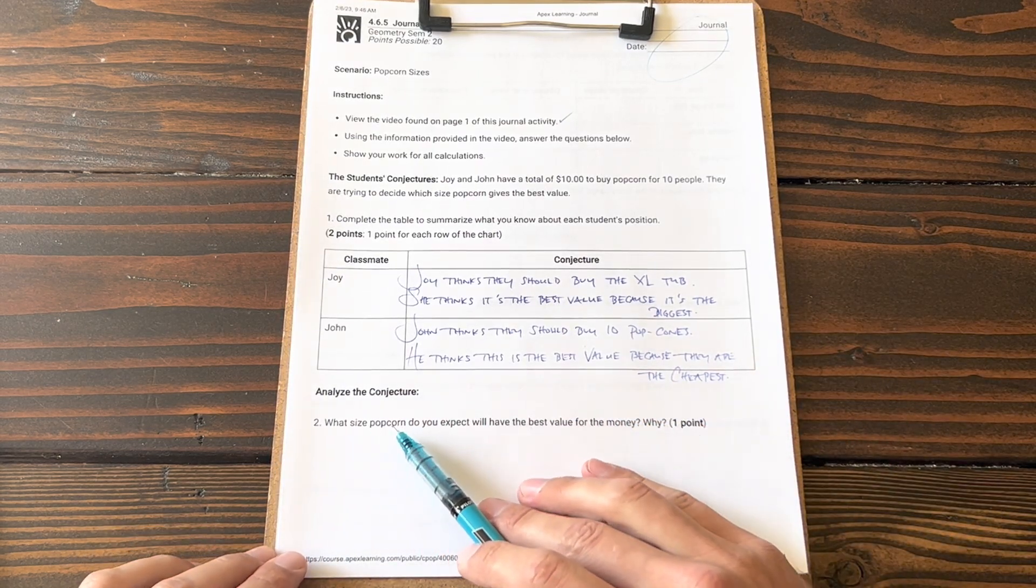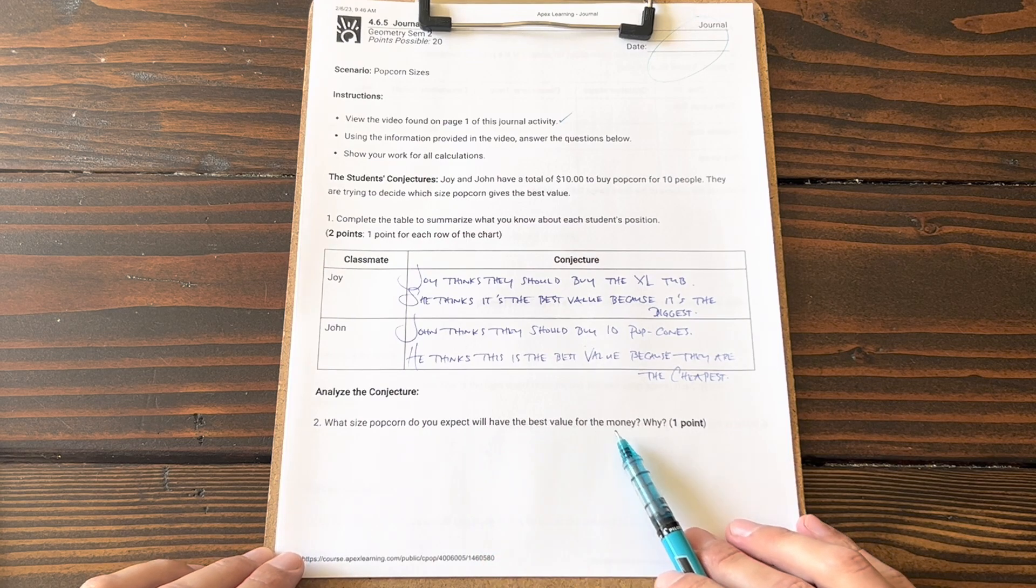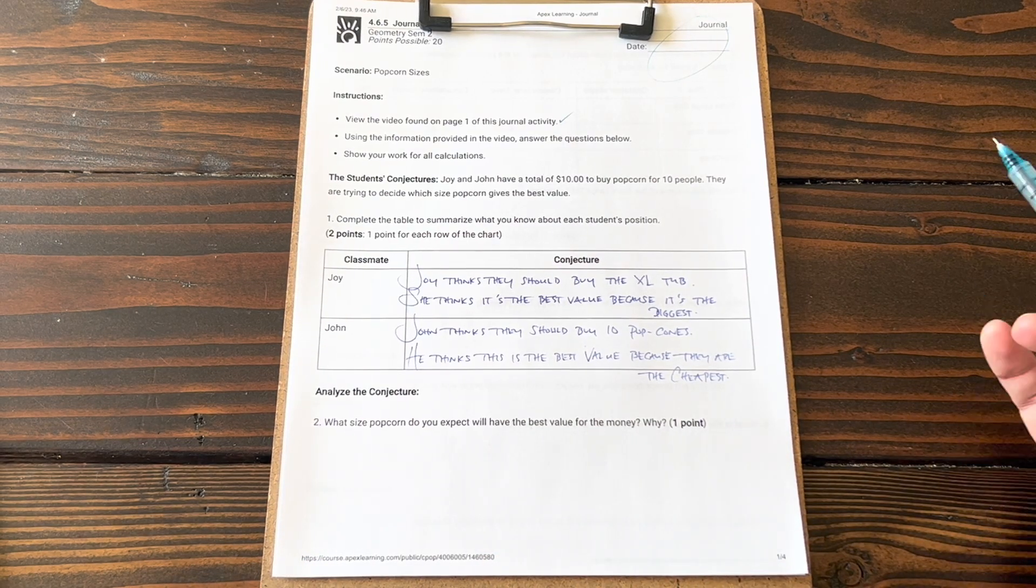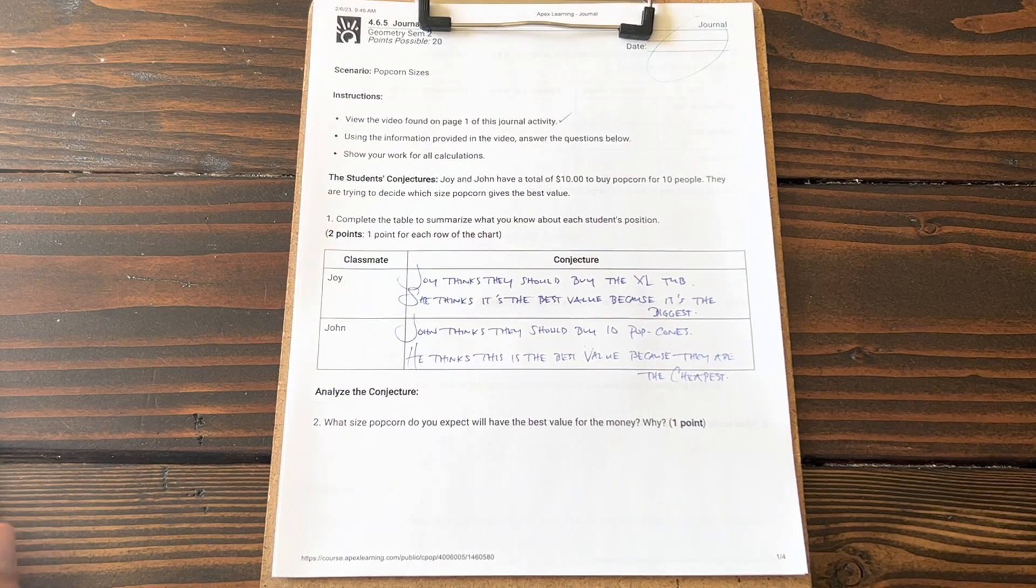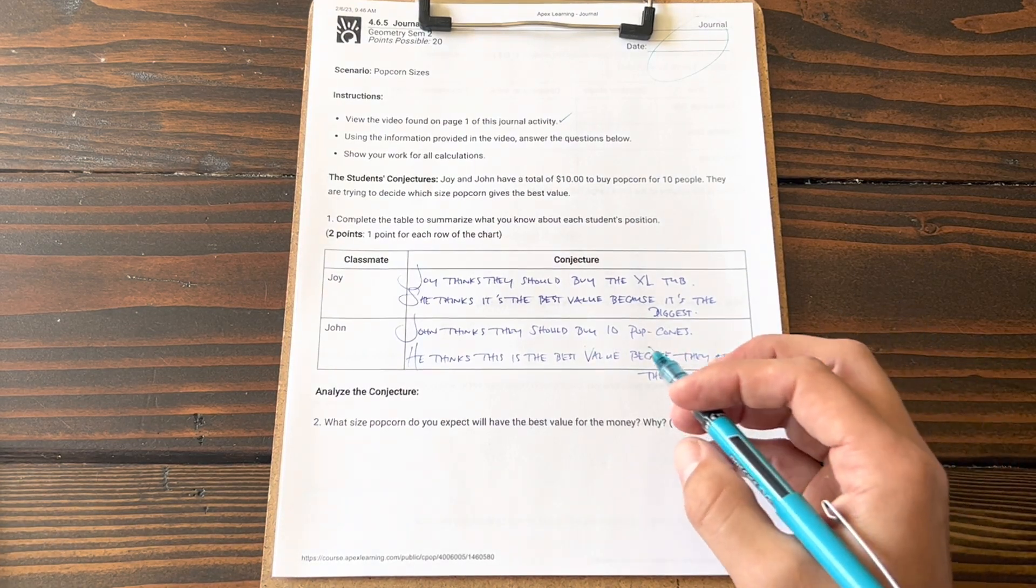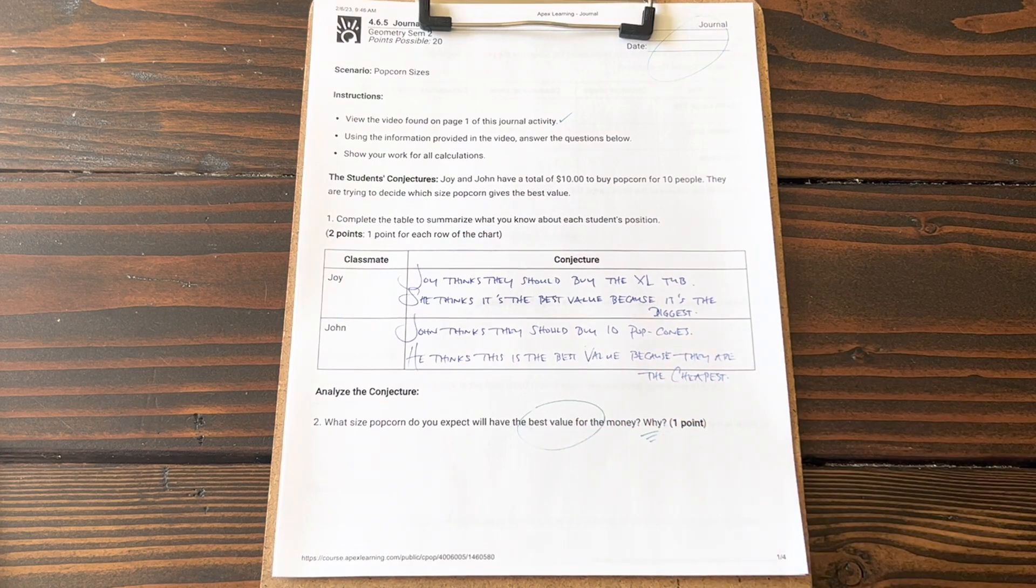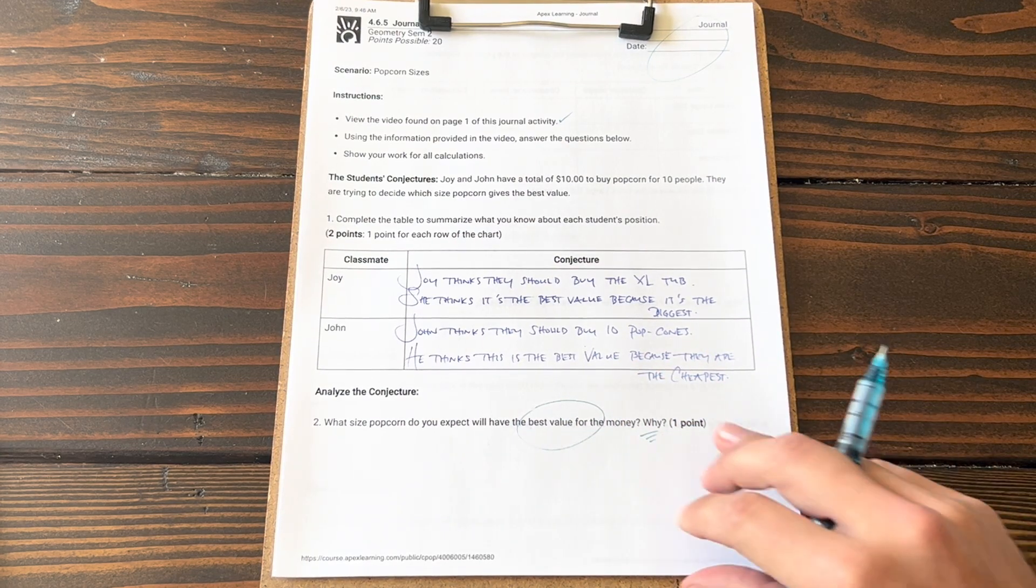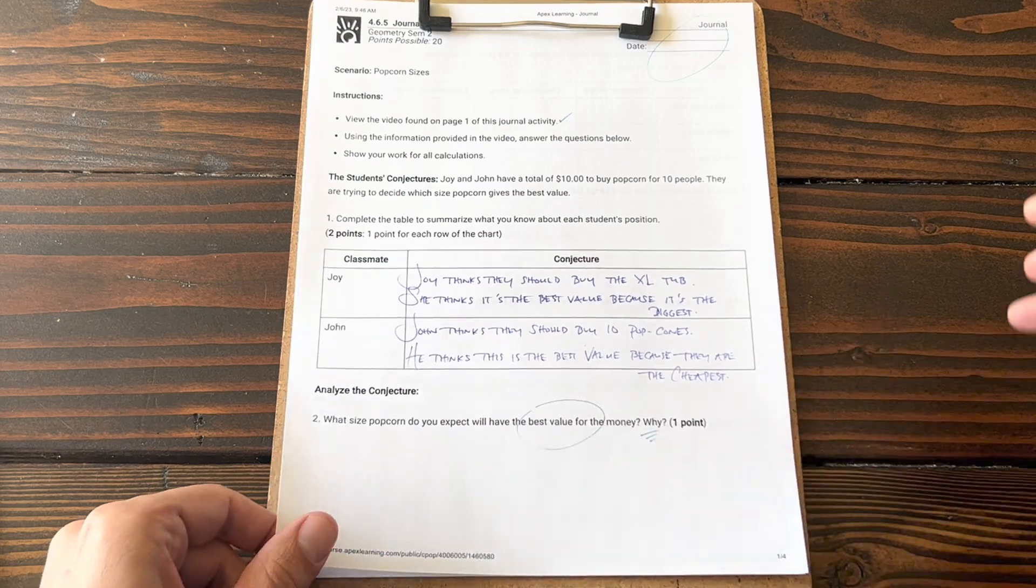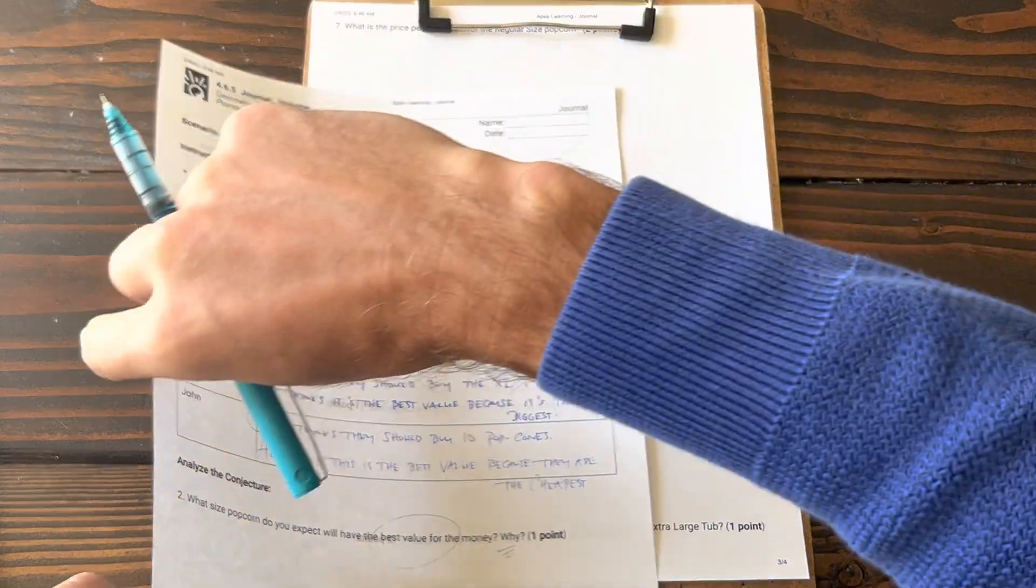Question 2: What size popcorn do you expect will have the best value for the money and why? There's no wrong answer here. Please write down which one you expect will have the best value and also give a reason why you think that would be the best value. No wrong answer, so just write something down. Complete sentences, please.